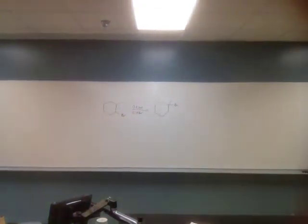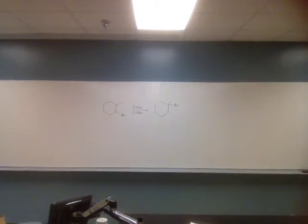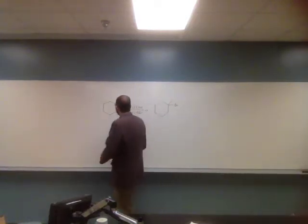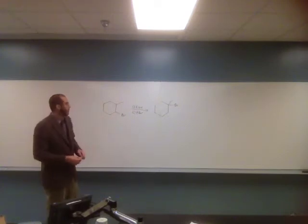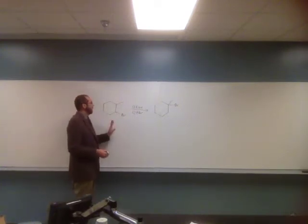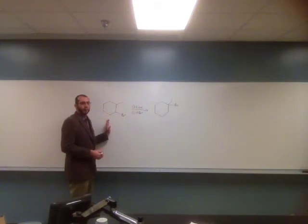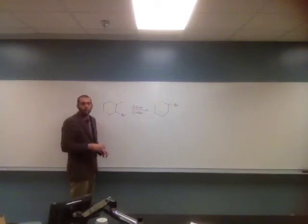Let's try to do this one together. It asks: write a complete mechanism for the following reaction. Show all intermediate structures, formal charges, and electron flow using the curved arrow convention. When I'm doing mechanisms, I like to think about them stepwise. One thing students often don't do — but really should — is put all the lone pair electrons on first, to keep track of all the electrons. So that's what I'm going to do.